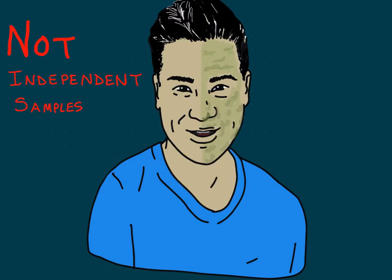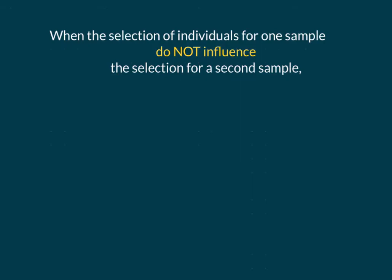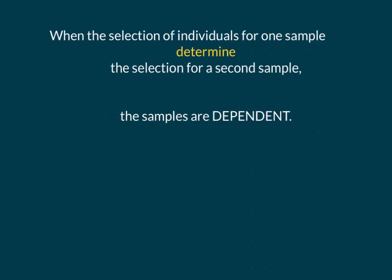So let's talk about what an independent sample is. When the selection of individuals for one sample does not influence the selection for a second sample, the samples are independent. However, when the selection of individuals for one sample determines the selection for a second sample, the samples are dependent. This is also called matched pairs sampling. Another example: if you were to choose one spouse to be in a study about marriage dynamics or health of married people, the other spouse would also be in the study. But we are not going to do matched pairs sampling.